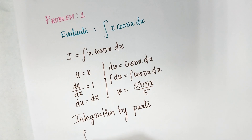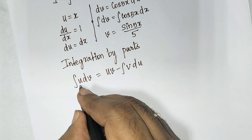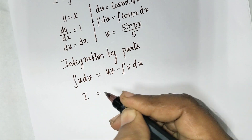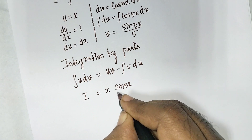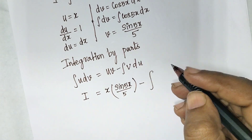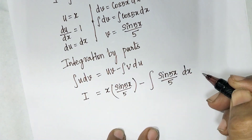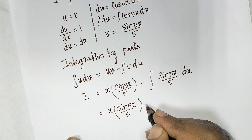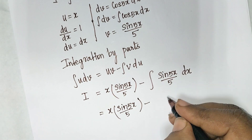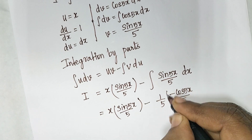Applying integration by parts: integral u·dv equals u·v minus integral v·du. So I equals x·(sin(5x)/5) minus integral of (sin(5x)/5)·dx. Integrating: x·sin(5x)/5 minus (1/5)·(−cos(5x)/5).